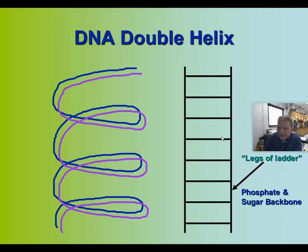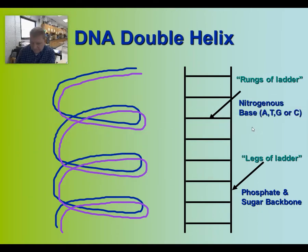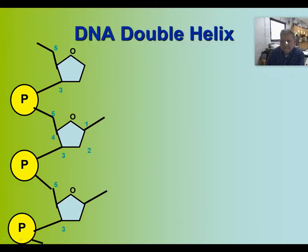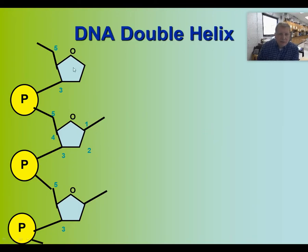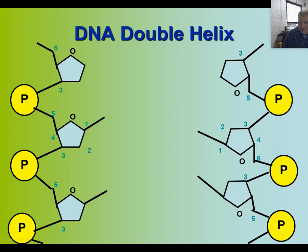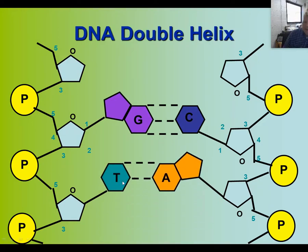The legs of the ladder are the phosphate and sugar backbone. The rungs of the ladder are the nitrogenous bases A, T, C, and G. On each side you have alternating phosphate and sugar, and in the center you have the nitrogenous bases — C connecting with G, and A connecting with T. If you have a diagram to fill in, you can complete it on your paper.